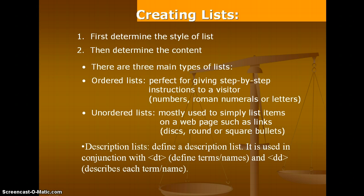In an ordered list, there are three types of attributes we are using: the default numbers, Roman numerals, and letters. An ordered list starts with the ol tag, and each item starts with the li tag. We can see numbers, Roman numerals, or letters as the types of ordered list. The second list is the unordered list, mostly used to simply list items on a webpage such as links.